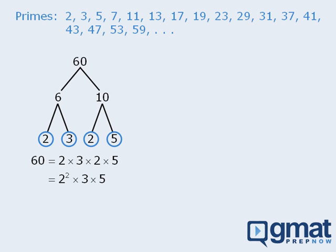To demonstrate this, let's find the prime factorization of 60 again. Once again, we know that 60 is not prime, so we want two numbers that multiply to be 60. This time, we'll use 3 and 20. When we examine these two numbers, we see that 3 is prime, so we'll circle it. Now, 20 is not prime, which means we can write 20 as the product of two numbers. It doesn't matter what two numbers we use, as long as they multiply to be 20. How about 10 and 2? Now, 2 is prime, so we'll circle it.